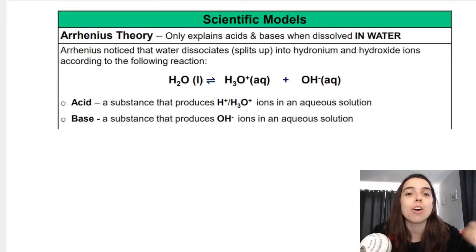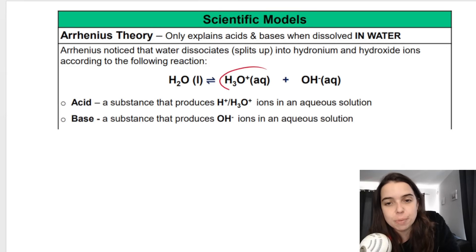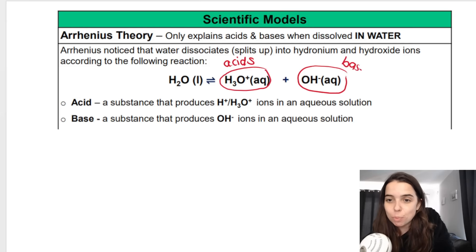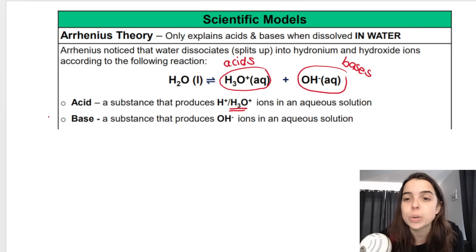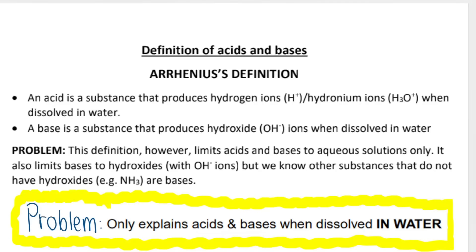Let's start with Arrhenius and Arrhenius' theory. Arrhenius noticed that water dissociates or splits up into hydronium ions, H3O+, remember I told you to link this with acids, and hydroxide ions, OH-, which I told you to link with bases. Arrhenius discovered that an acid produces H3O+ or hydronium ions in an aqueous solution, and bases produce hydroxide ions in an aqueous solution, in water.